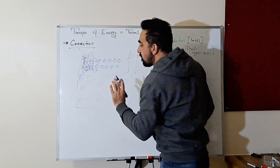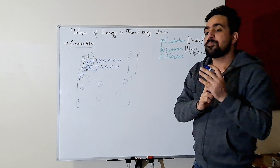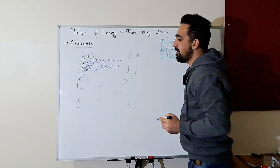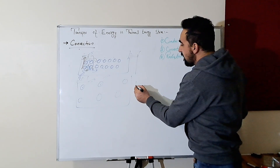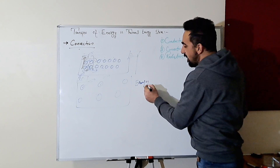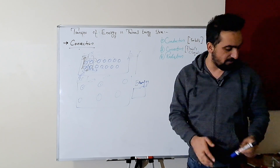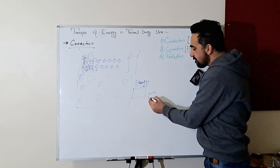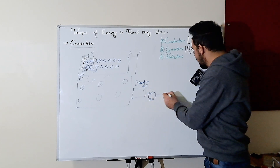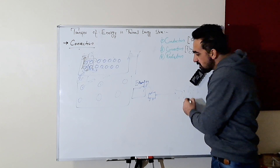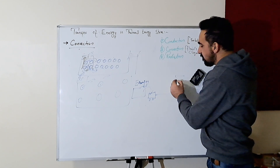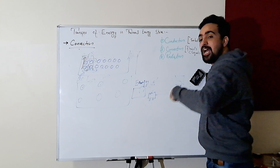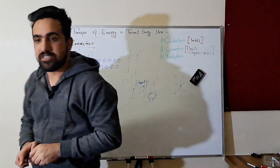In convection, the energy is transferred not from particle to particle, but by the actual movement of the particles. What we see is the particles behaving like carriers — they get energy, they go away, they unload their energy, they come back. Meanwhile, particles without energy come back to the source, get energy, go back out, and the cycle continues. This cycle is called convection currents.